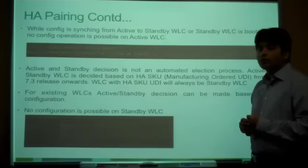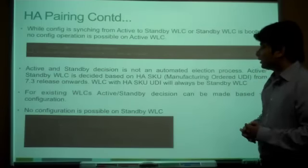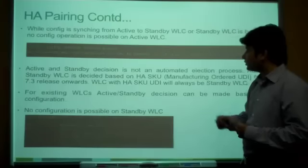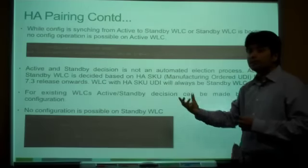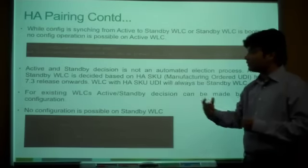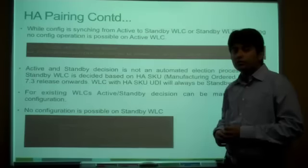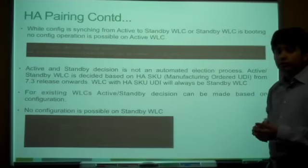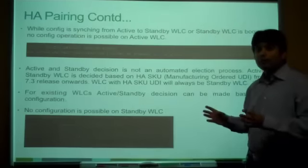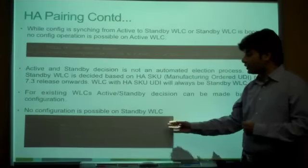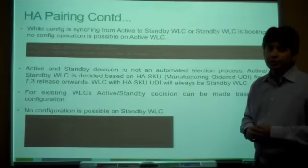Active and standby decisions are not automated — we must manually define who is the active and who is the standby controller. The standby controller is decided based on an HA-SKU, available from the 7.3 release. An end user can order a controller with an HA-SKU, which comes with zero AP license and will always be the standby controller. For existing WLCs upgraded from 7.2 to 7.3, this can be configured via configuration. No configuration is possible on the standby controller — it is just waiting to take over the network.